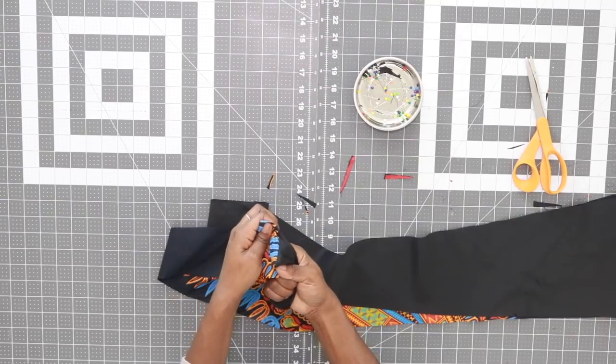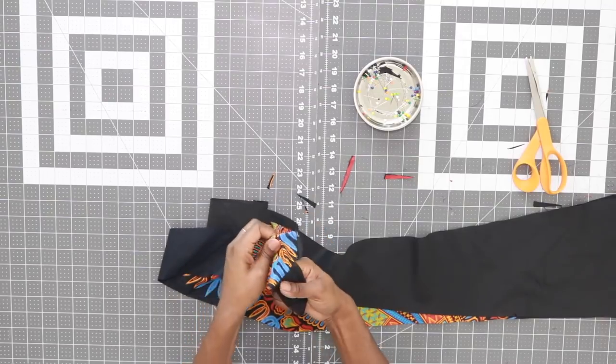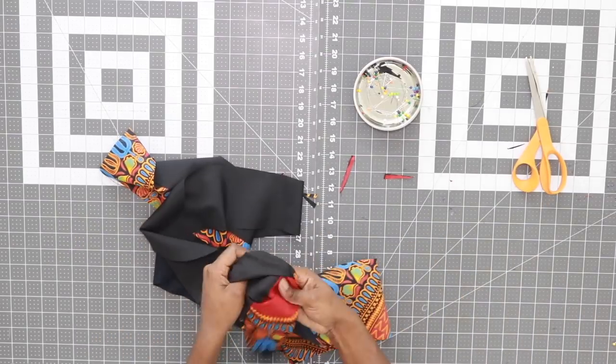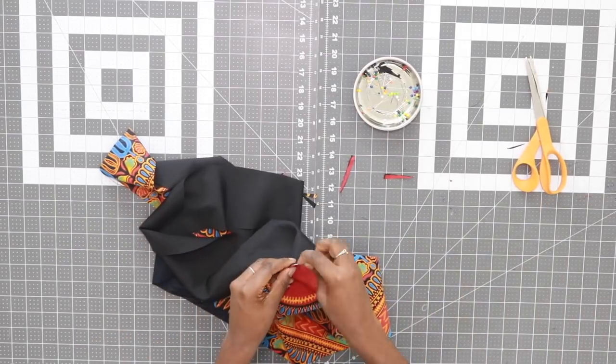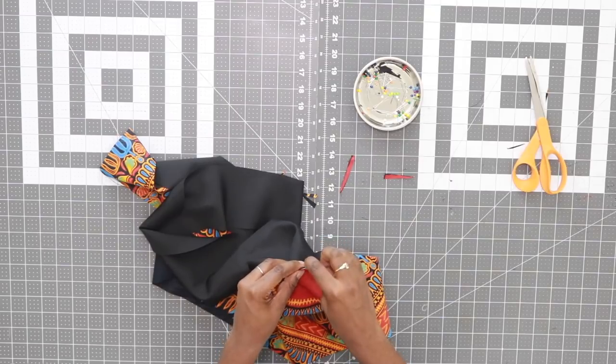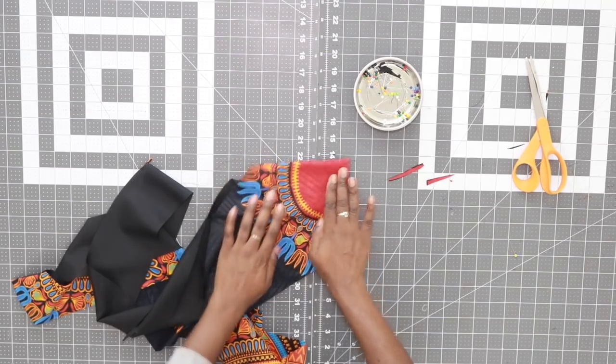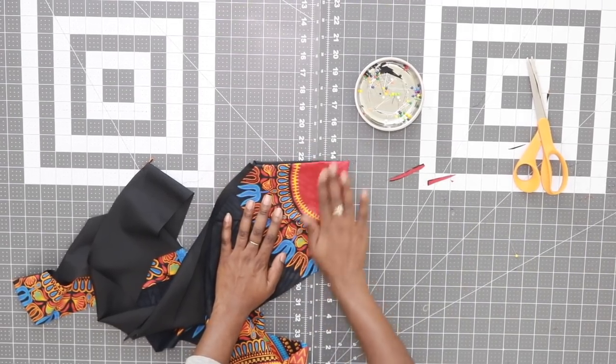And if you would like an extra crisp point, you can take a pin and pick that out. But be sure to make sure you're careful so you don't break any of your stitches if you decide to use a pin. Now you can take this to your iron and give both ends a nice press.